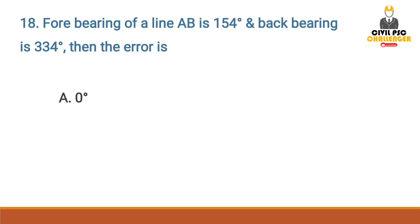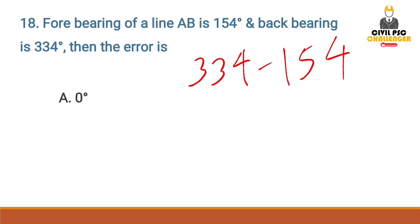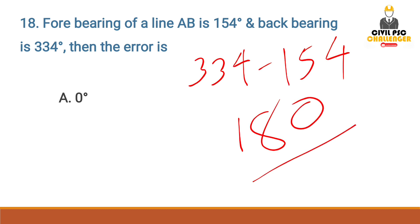The difference is zero. We can add 180 degrees to the back bearing. The difference between the fore bearing and back bearing is 180 degrees. We can add 0 degrees if we add the two values.